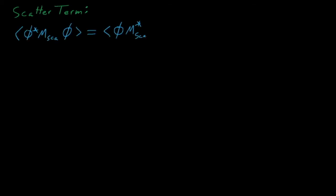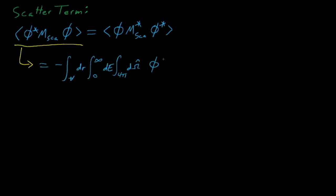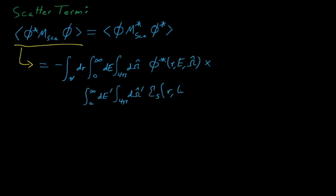Next, we'll derive an expression for the adjoint scattering source term that satisfies the property of adjoints. The inner product of phi-star times the scattering source term is equal to the integral over space r, energy e, and direction omega of phi-star (a function of r, e, and omega), times the integral over e-prime and omega-prime of the double differential scattering cross-section times phi as a function of r, e-prime, and omega-prime. To get an adjoint form of this expression, we need to find some mathematical manipulation that will swap phi-star and phi, which don't even use the same variables — one uses e and omega, whereas the other uses e-prime and omega-prime.